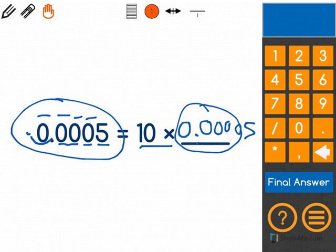And the 5, which would be 500,000ths, written like this.